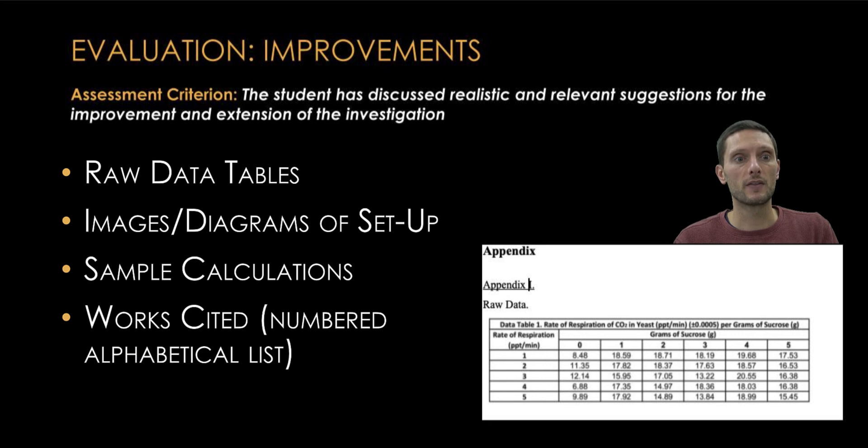The last part that's not necessarily tied to the evaluation rubric, but I think is worth mentioning here, is the inclusion of an appendix. The appendix is the kind of extra material that's associated with the lab but doesn't need to be in the main body of the report. Typically things that you're going to have in the appendix would be a works cited or a bibliography.